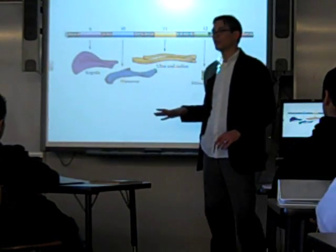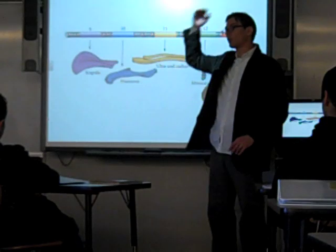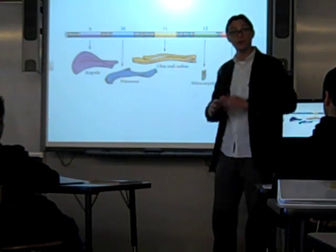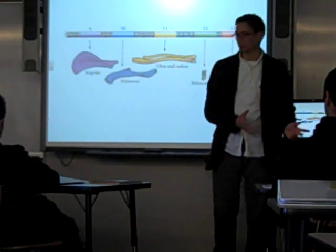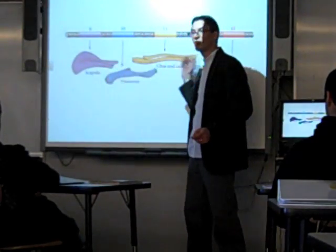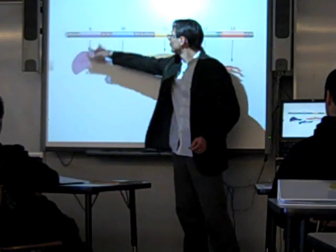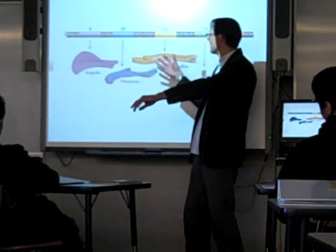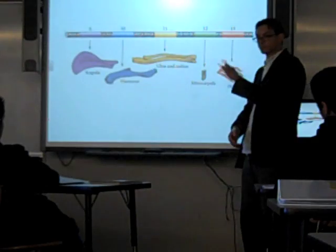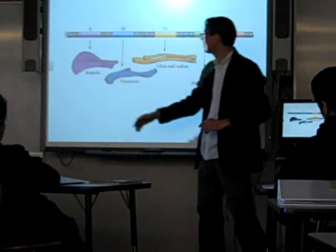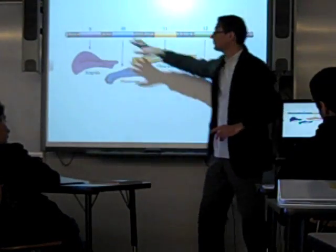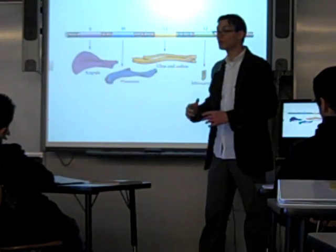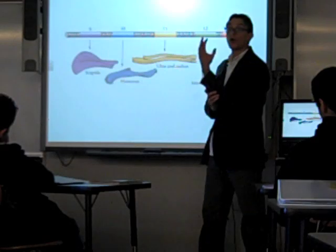Those same Hox proteins that say, early on, whether it should be the top of the neck all the way down to the bottom of the tail, are later reused to specify the position along the arm. When certain of those proteins are active, you get a shoulder; when others, you get an upper arm and a lower arm, and then finally fingers. Just as from the front to the back of the fly, these exact same proteins are used — not to specify where wings or ribs ought to go, but now where the forearm ought to go.